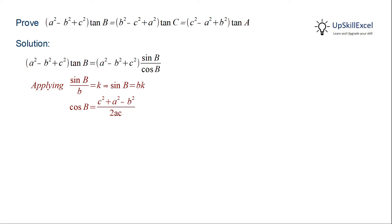Substituting sin B and cos B and then doing the simplification, that is cancel out a² - b² + c² term, we get 2abck.